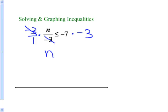Because I multiplied both sides by a negative, I'm going to switch my sign from less than or equal to to greater than or equal to. And negative 7 times negative 3 is 21.